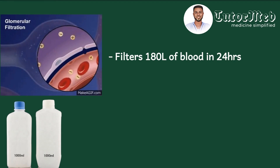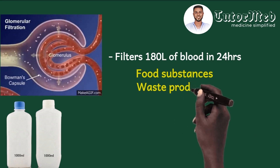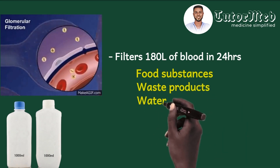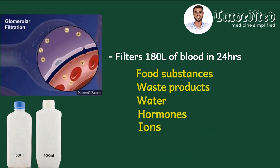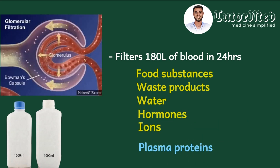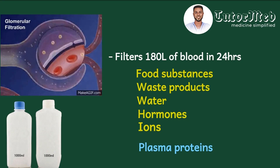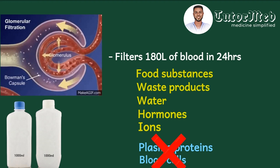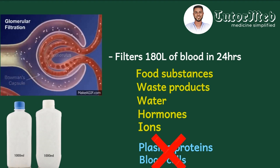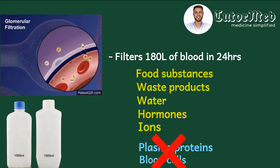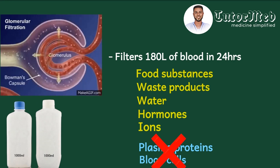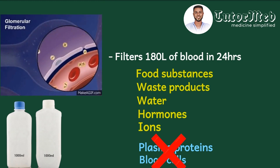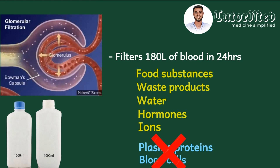The filtrate contains food substances like glucose, waste products like creatinine and urea, water, hormones, and ions — but not plasma proteins like albumin, because they are very large and negatively charged, and not blood cells. When this filtrate journeys through the renal tubules, it is reabsorbed such that out of the 180 liters, only about one liter comes out as urine in 24 hours. Most glucose, most sodium, and most water are completely reabsorbed, leading to that reduced volume.